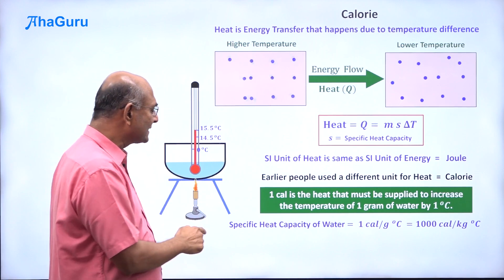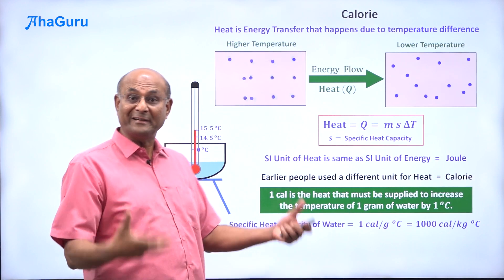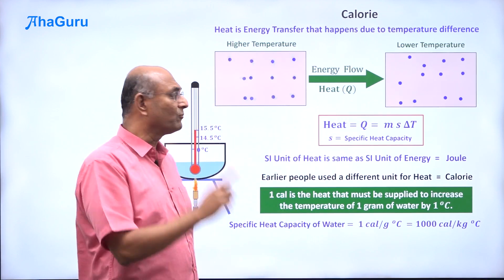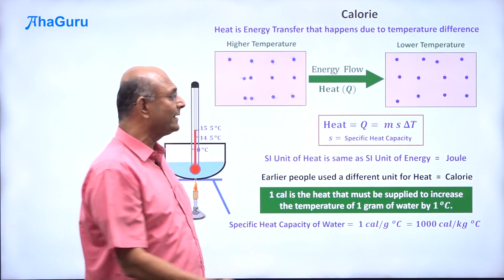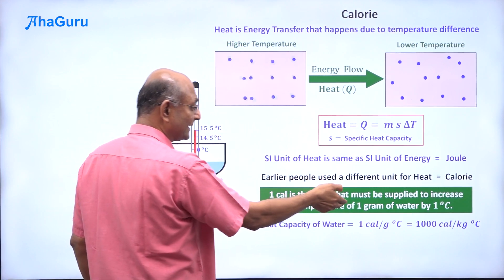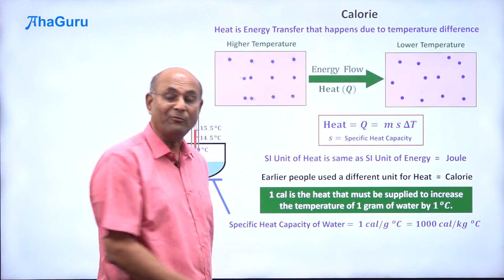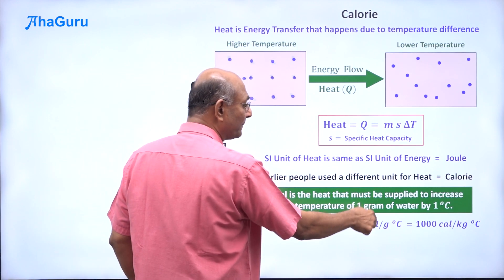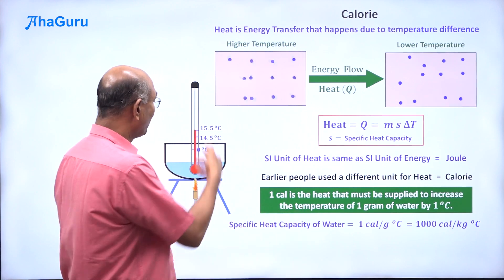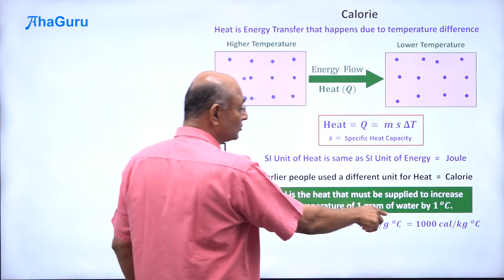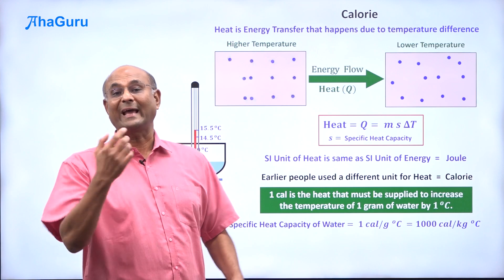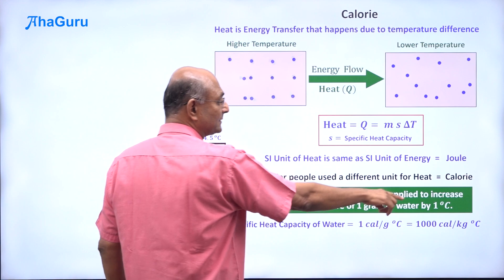This tells us that the specific heat capacity of water is, by definition, exactly one calorie per gram degree Celsius. Because to increase the temperature of one gram by one degree Celsius, one calorie is required — so that must be exactly the specific heat capacity of water. In these non-SI units, the specific heat capacity of water is exactly one calorie per gram degree Celsius. If you want kilograms, that means one thousand grams, so it takes one thousand calories — giving one thousand calories per kilogram degree Celsius. In calories, this is an exact number because that is how the calorie is defined.